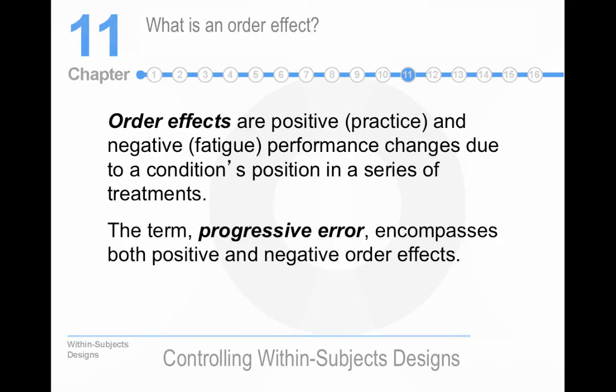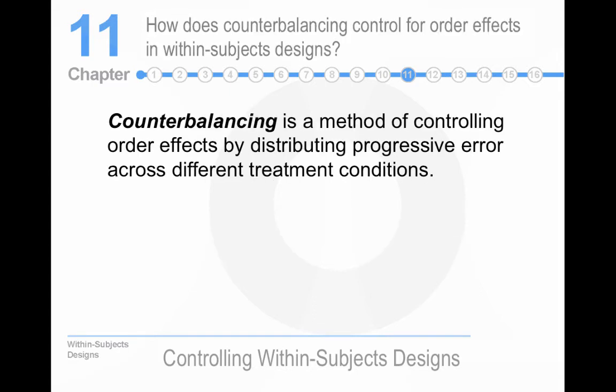Order effects are an issue in within-subjects designs. They can be positive or negative. And so, the term that we use is progressive error. You usually get both practice effects and boredom effects. But we call that progressive error, because as people progress through the study, the belief is that it grows. So, counterbalancing is how we deal with it. You can control order effects. You can't eliminate progressive error, but you can distribute it across your treatment conditions.